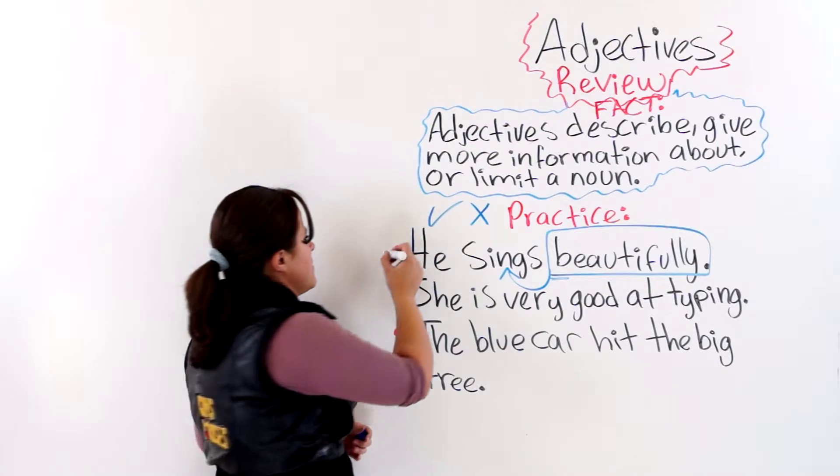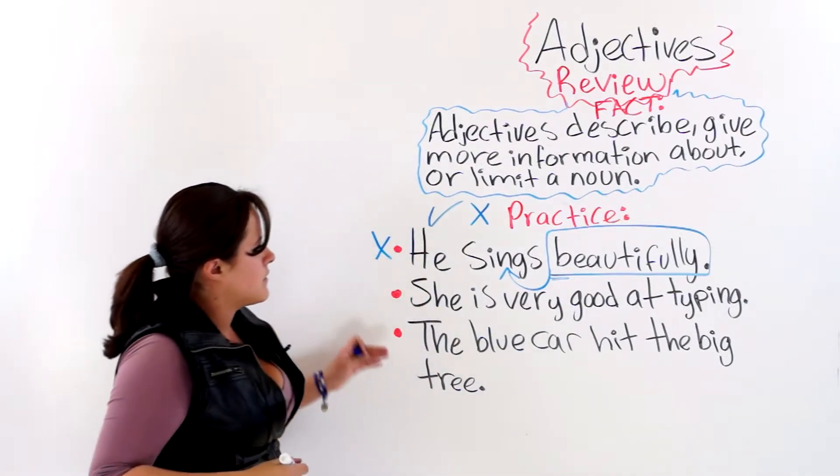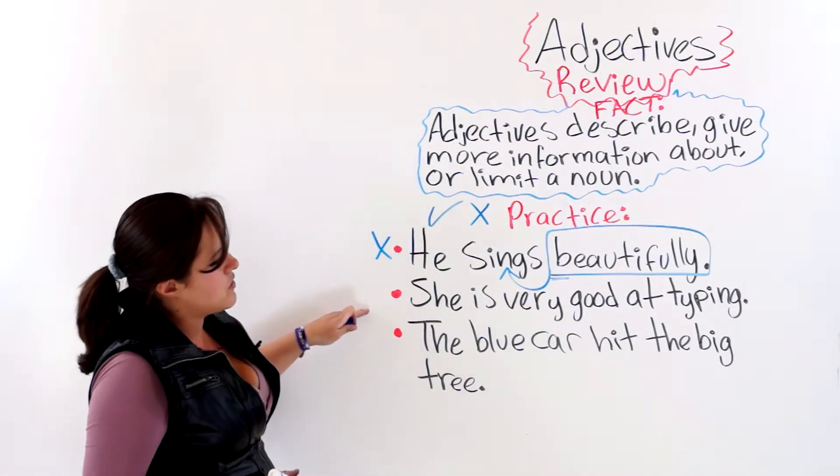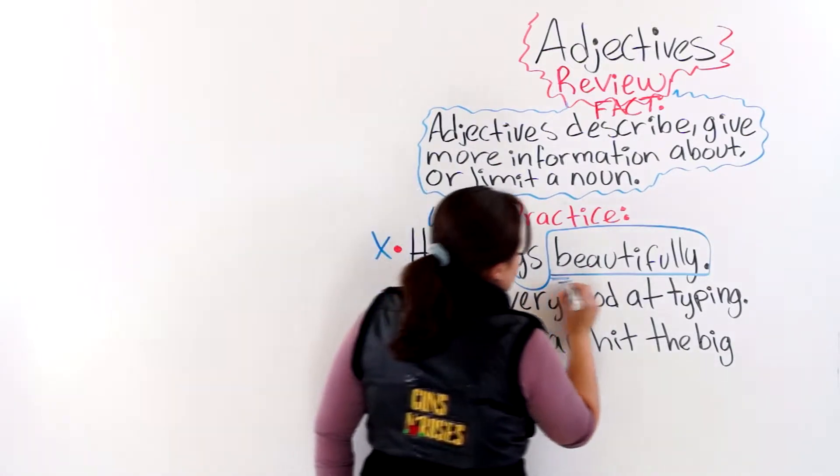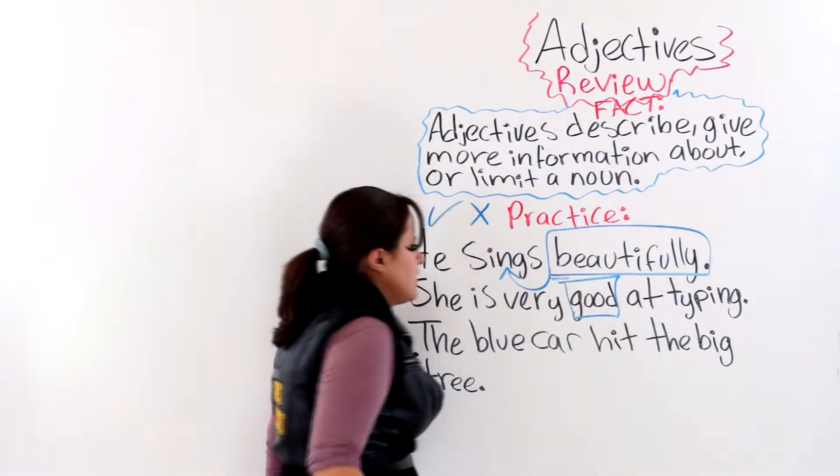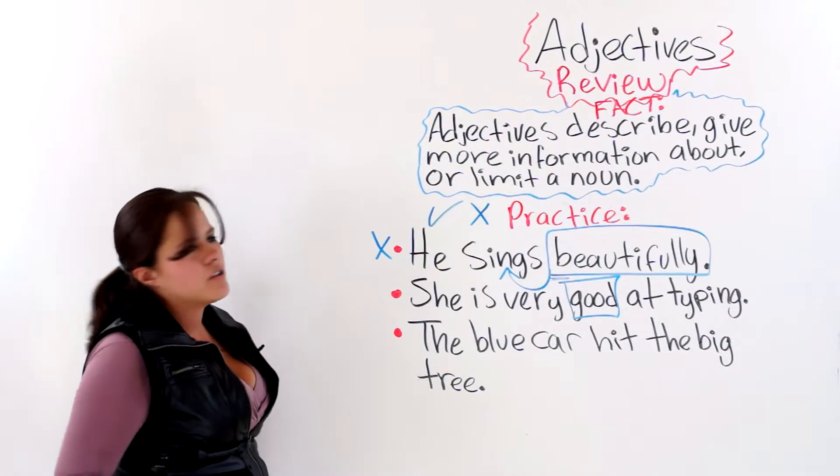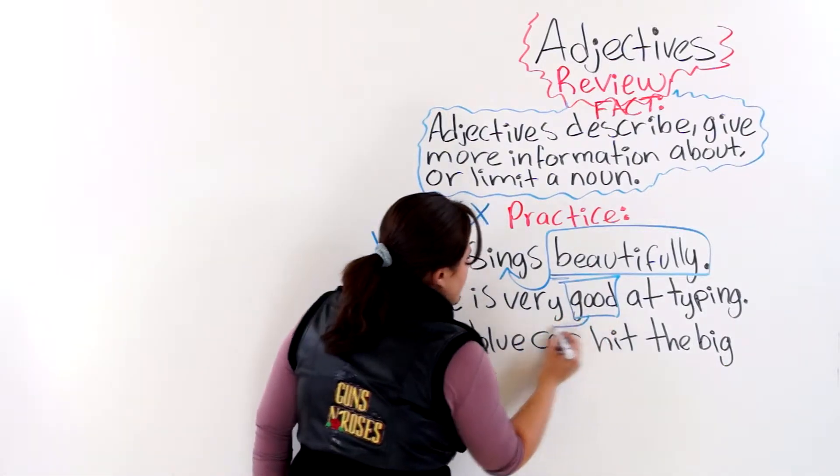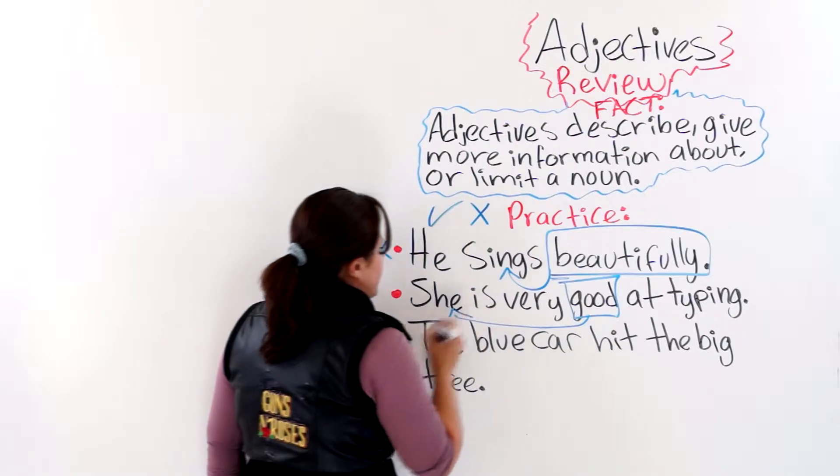The next one says, she is very good at typing. Good. This is describing this pronoun here, so it is by far an adjective.